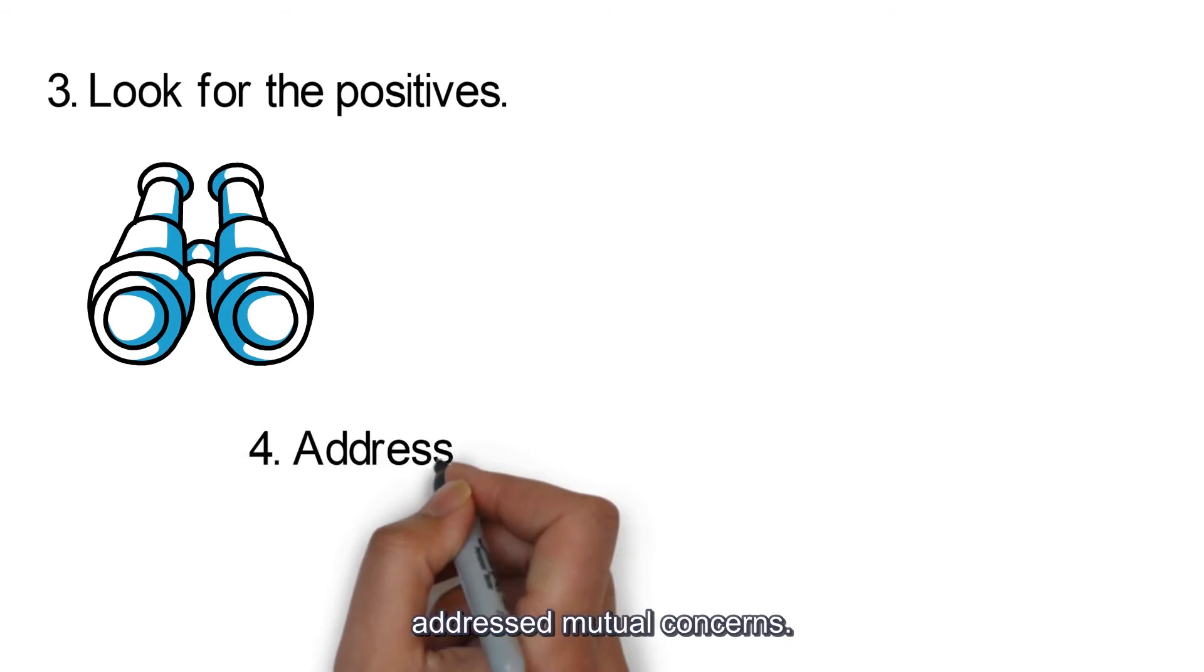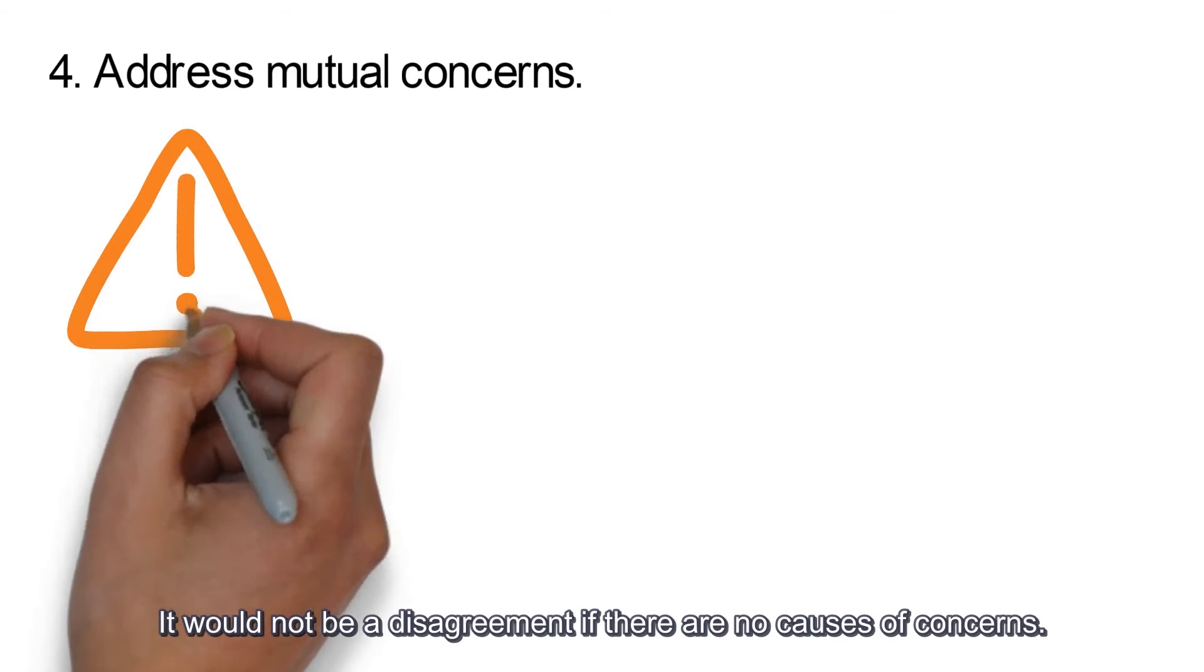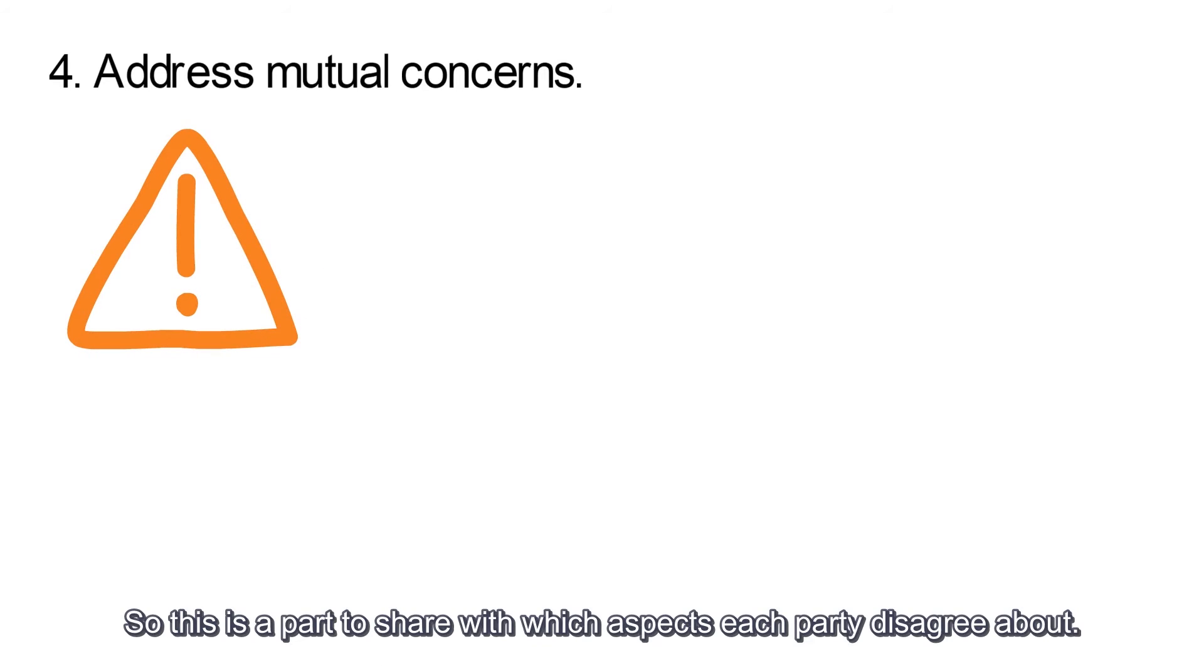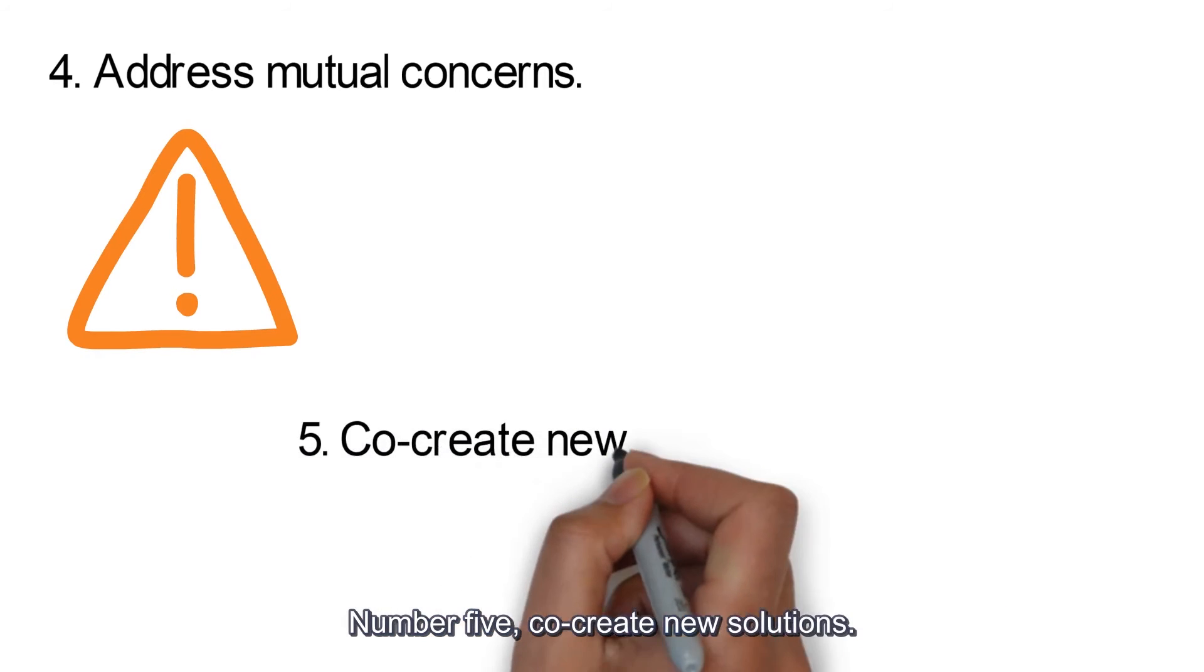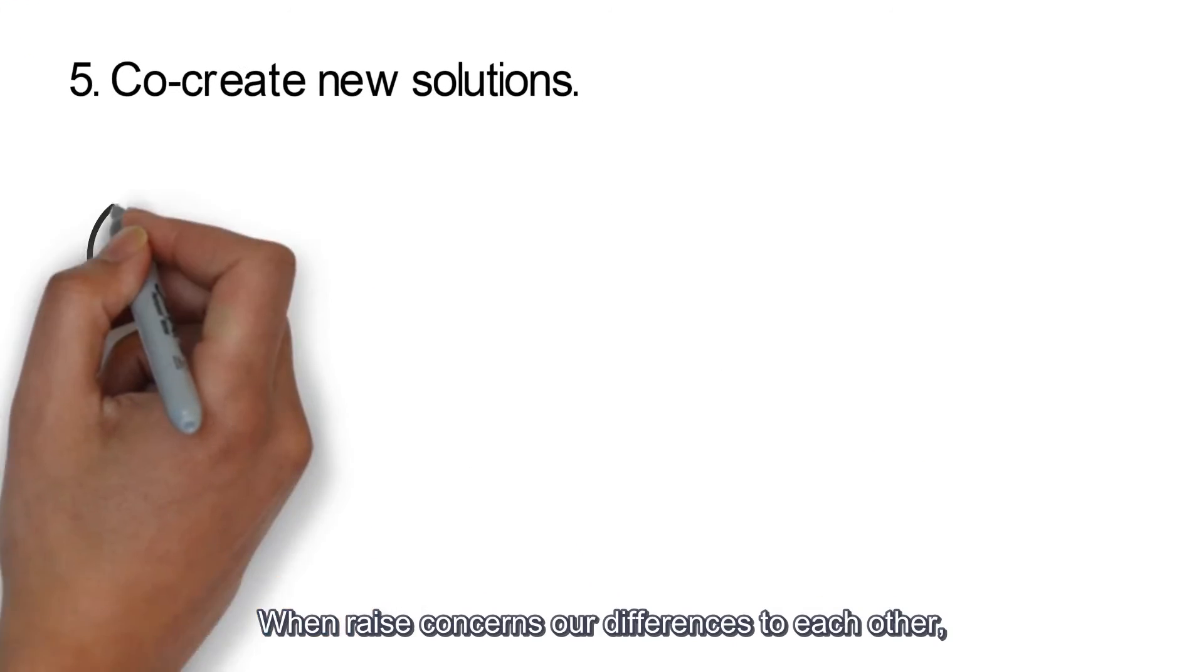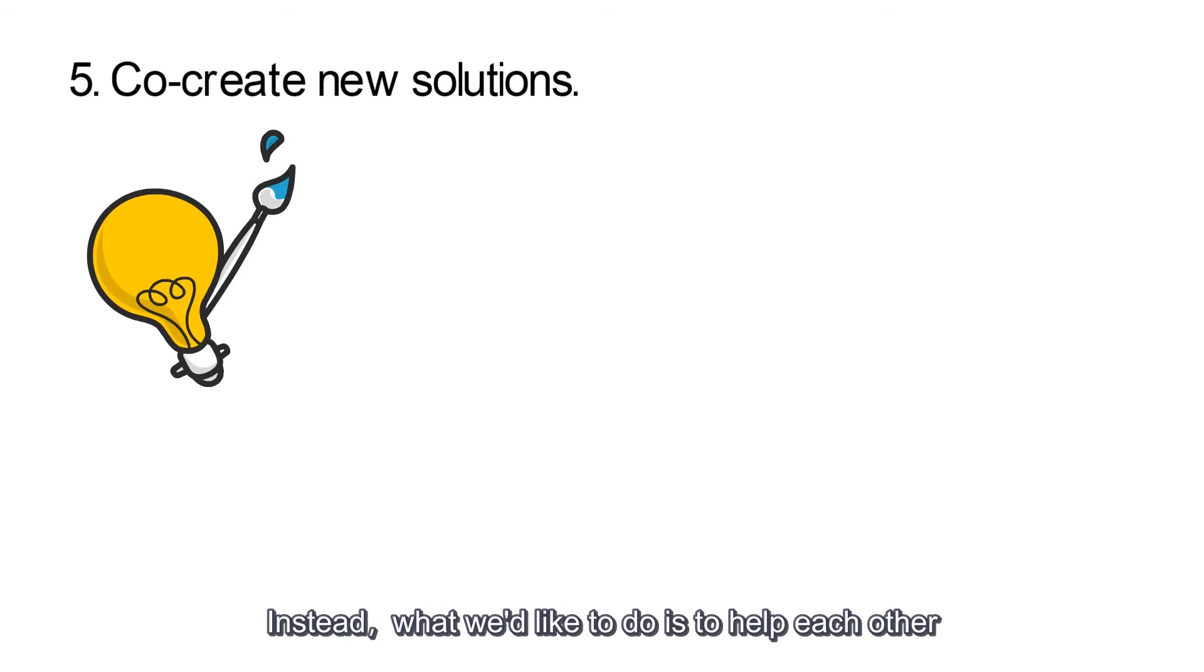4. Address mutual concerns. It would not be a disagreement if there are no causes of concerns. So this is the part to share which aspects each party disagree about. The key thing here, again, is to listen and see things from the other person's point of view before making judgments. 5. Co-create new solutions. When we raise concerns or differences to each other, it's not to shut down the other person. Instead, what we'd like to do is to help each other co-create solutions that are mutually acceptable. After all, it's a matter of different opinions or ways of working to reach common goals.